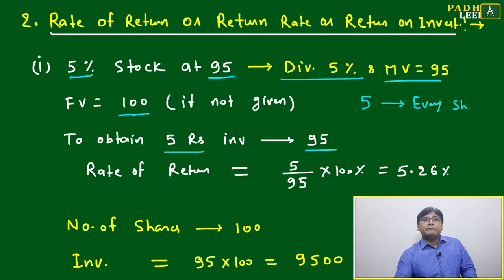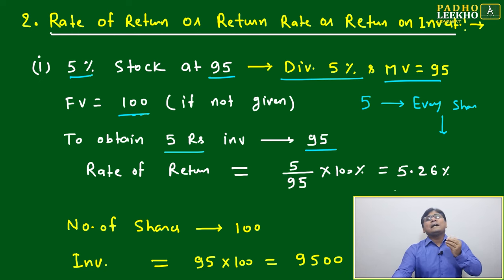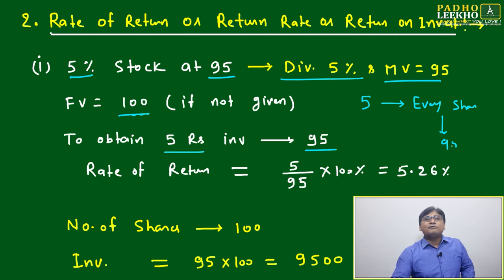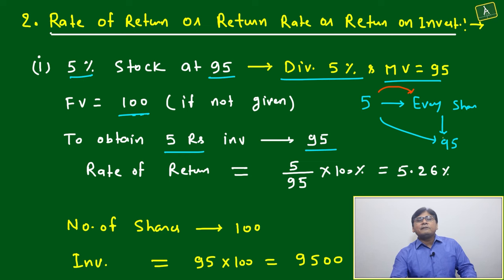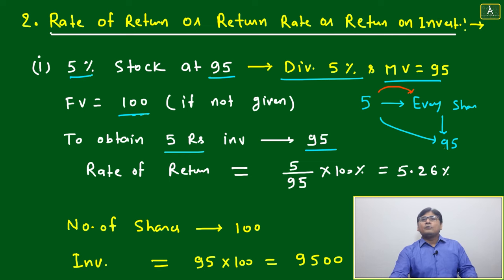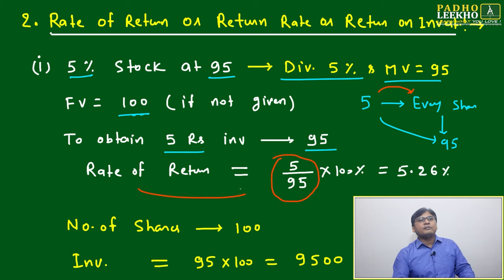This share might be purchased at 100 rupees, 120 rupees, or 95 rupees. If purchased at 95 rupees, you are getting five rupees on every 95 rupees of investment. That is the meaning of dividend here — five rupees you are getting on every share. Every share is defined based on the market value, meaning how much you are investing for one share, which is 95. So 5 out of 95 gives you the rate of return.